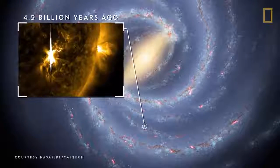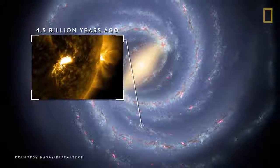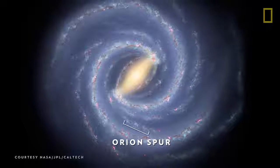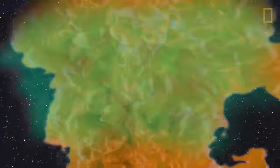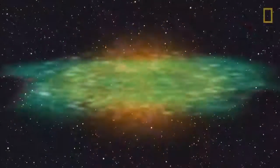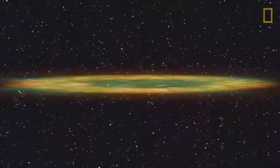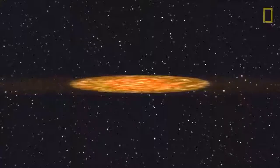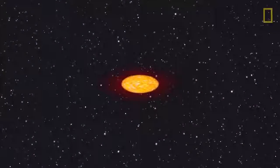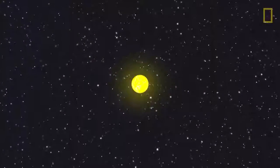Our Sun formed about 4.5 billion years ago in the Milky Way galaxy's Orion Spur. It was born when a cloud of dust and gas, known as a solar nebula, collapsed. In the middle of this formation, matter condensed into a burning ball of gas that became our Sun.